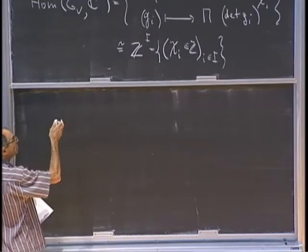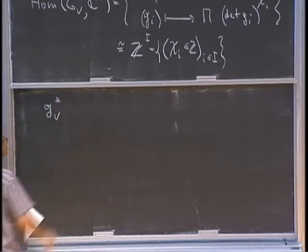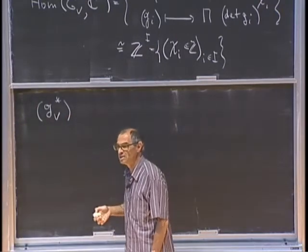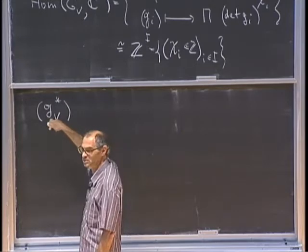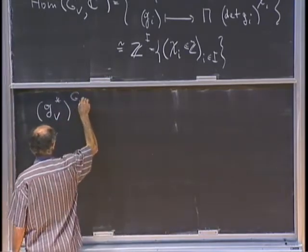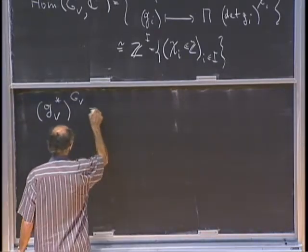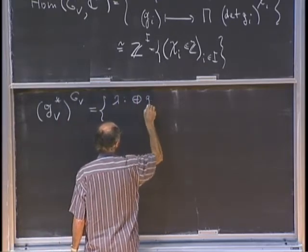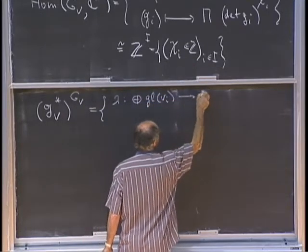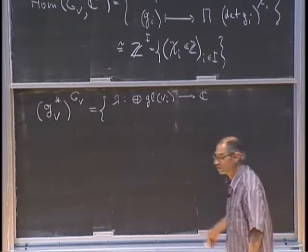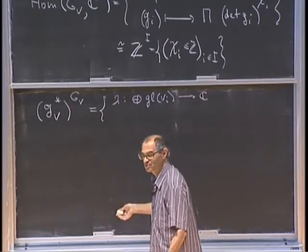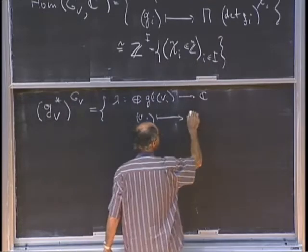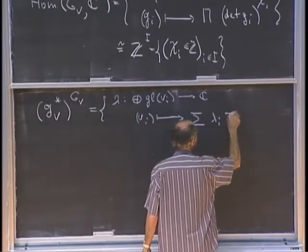The moment map is supposed to be G-equivariant, and we are only interested in the points fixed by G. So we are looking at linear functions from the direct sum of GL(V_i) to C, which are conjugation invariant. A conjugation invariant function on matrices is the trace — that's the only such function.